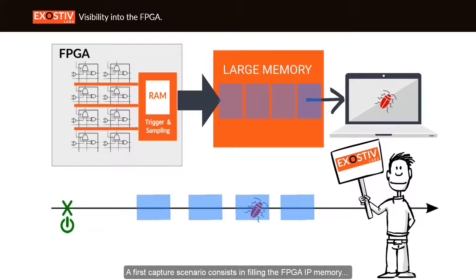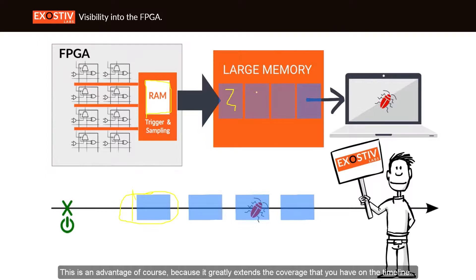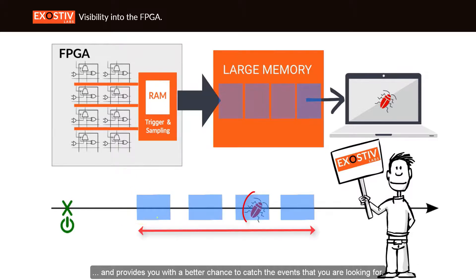The first capture scenario consists in filling the FPGA IP memory and sending this data quantity multiple times to the external memory. This is an advantage, of course, because it greatly extends the coverage you have on the timeline and provides you with a better chance to catch the events that you are looking for.